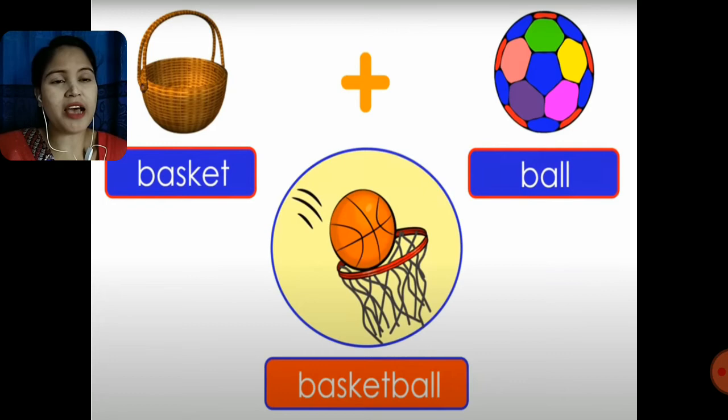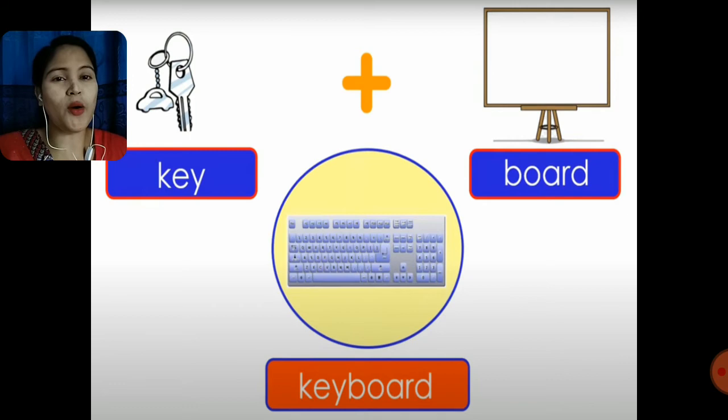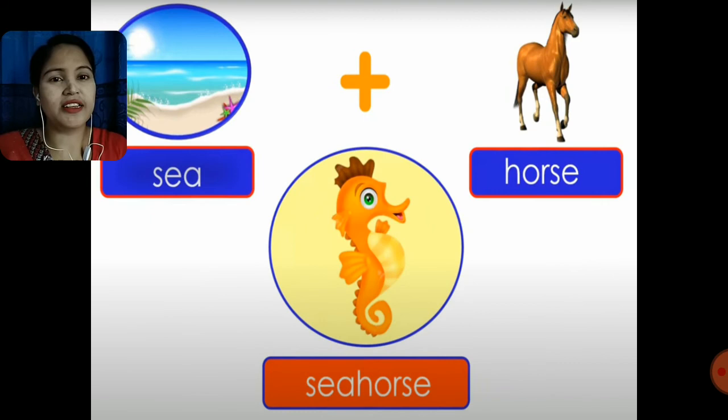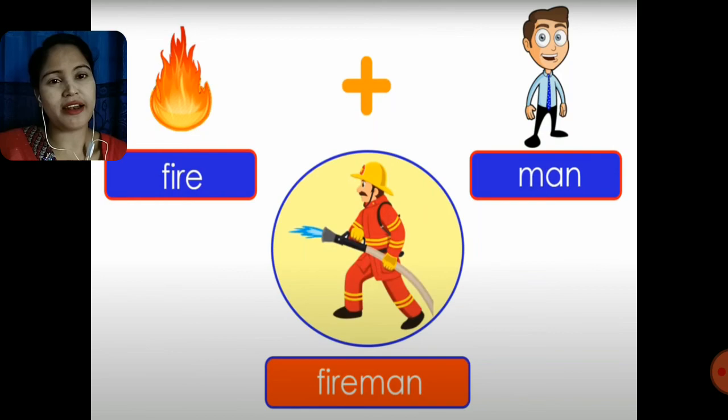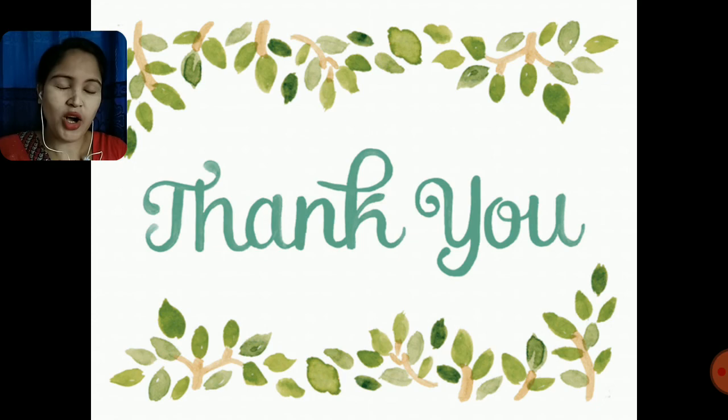Bat plus man gives batman. Basket plus ball gives basketball. Key plus board gives keyboard. Sea plus horse gives seahorse. Nail plus cutter gives nail cutter. Fire plus man gives fireman.